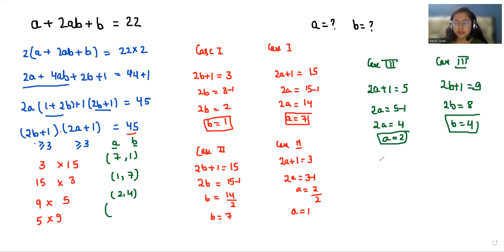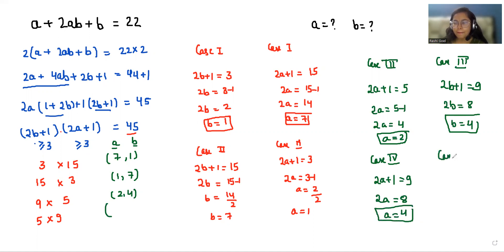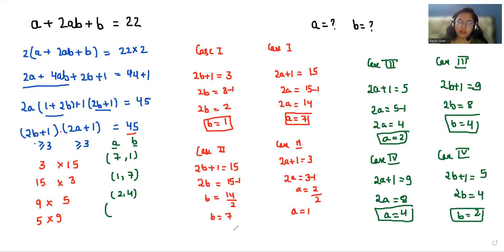Case 4: When 2a + 1 = 9, so 2a = 8 and a = 4. And 2b + 1 = 5, so 2b = 4 and b = 2. So the values are (a, b) = (4, 2).